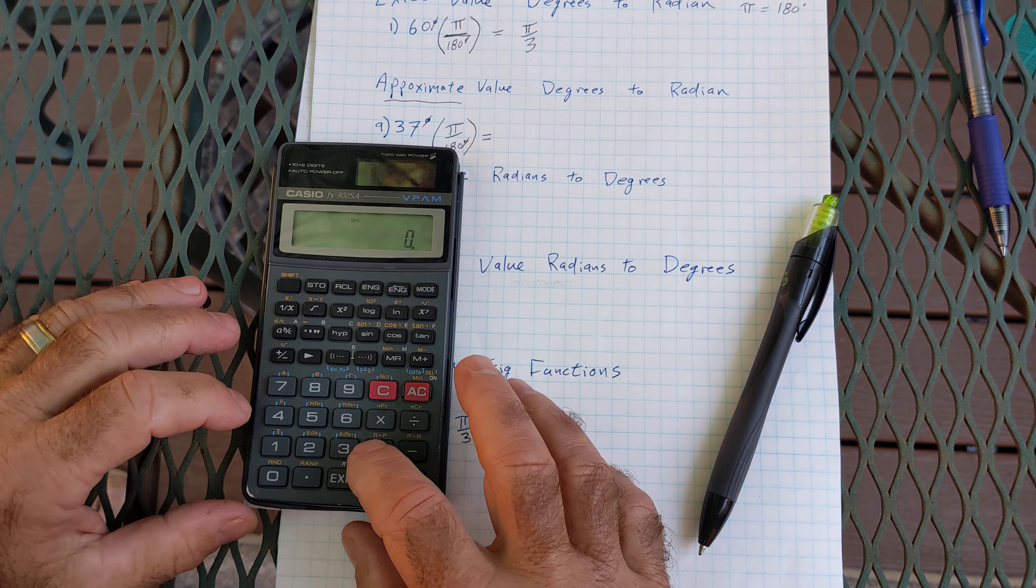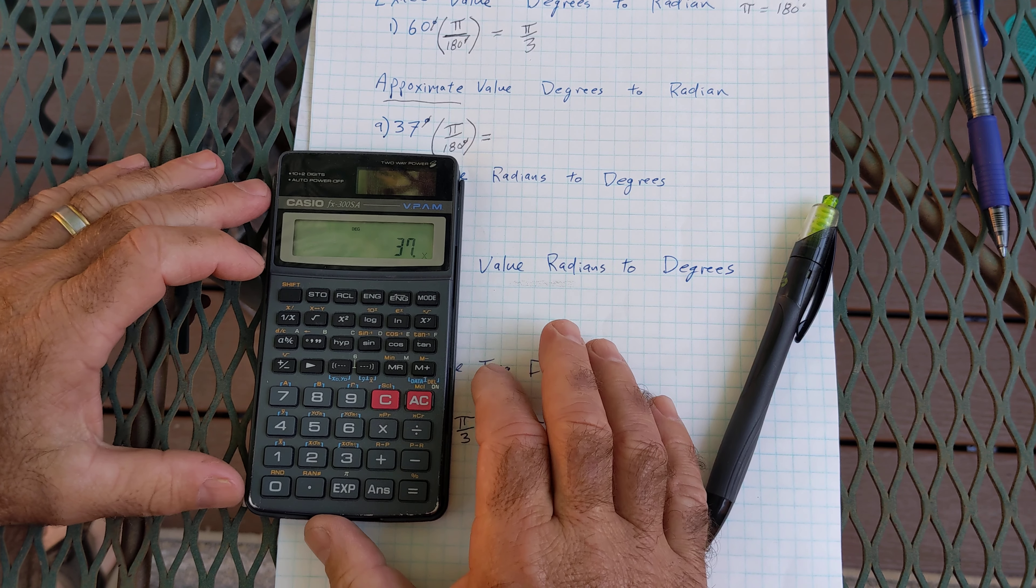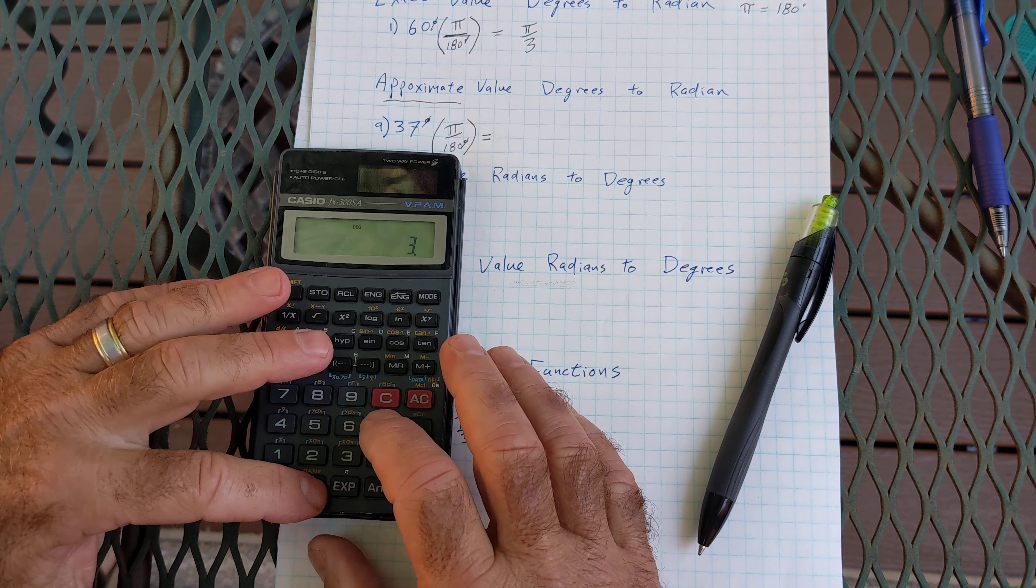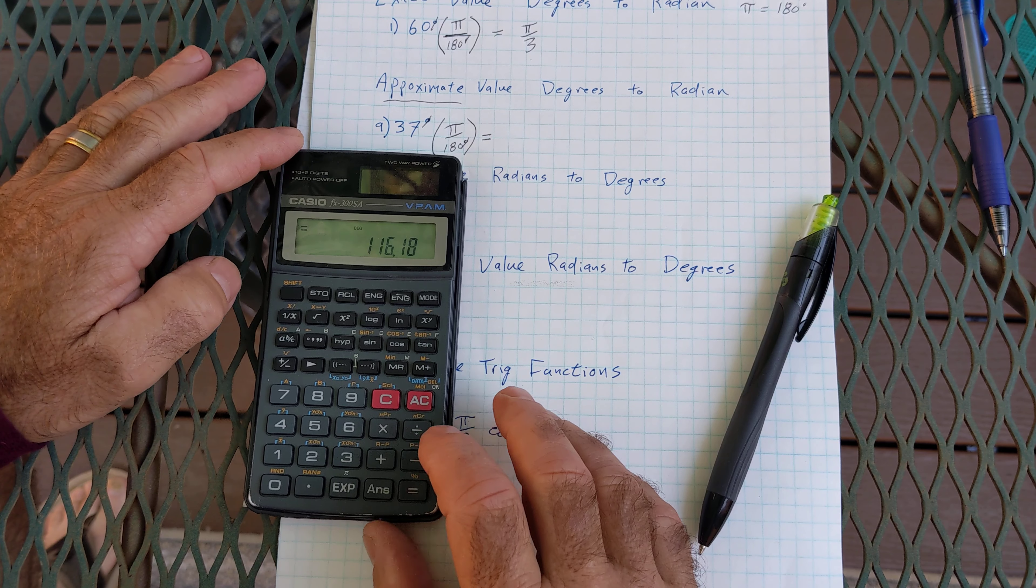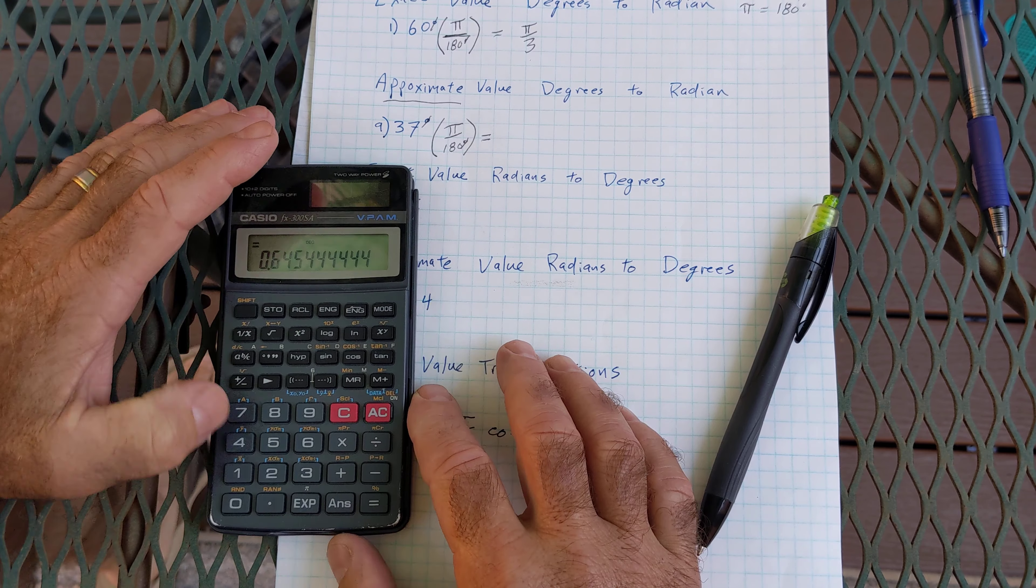All right, found one. So I'm going to go 37 times pi 3.14 equals divided by 180, and I get 0.65.